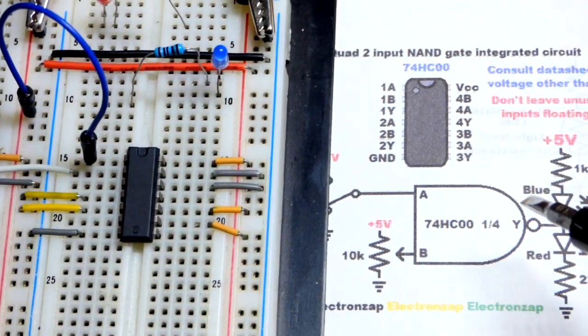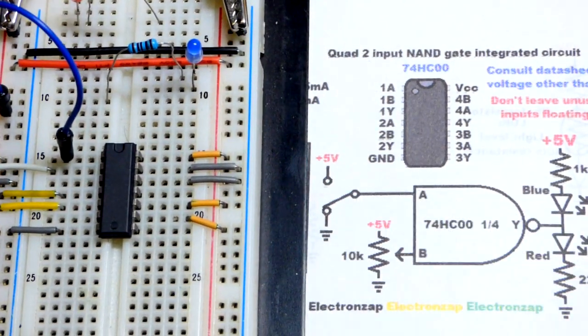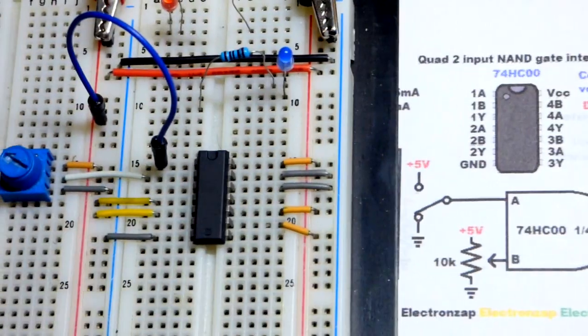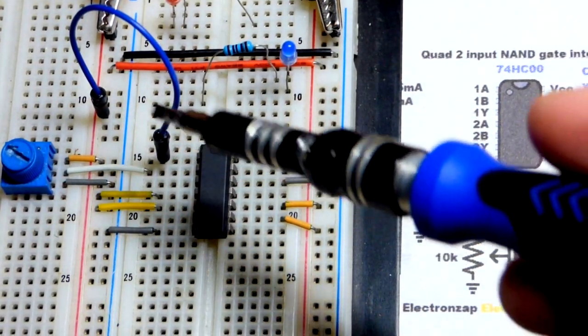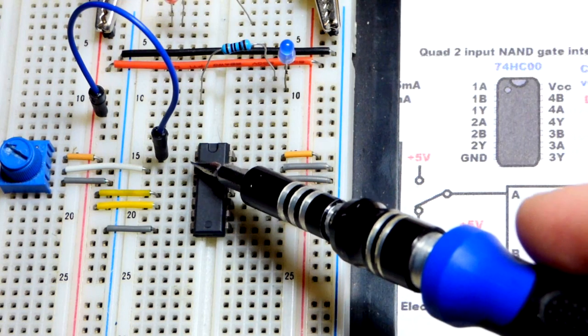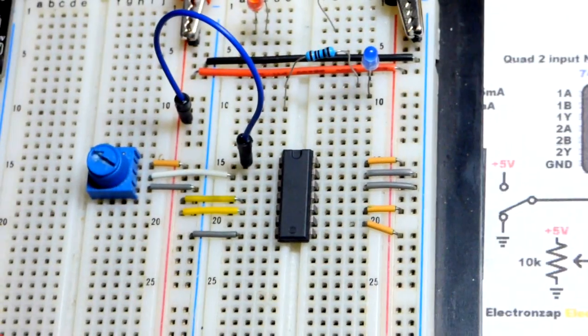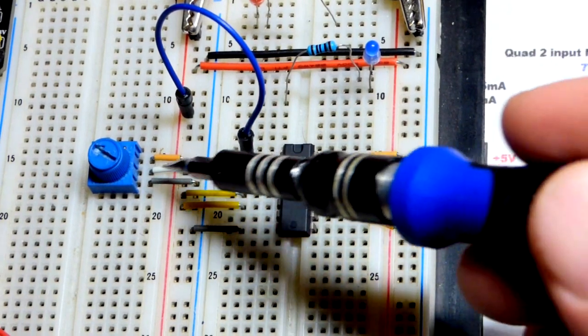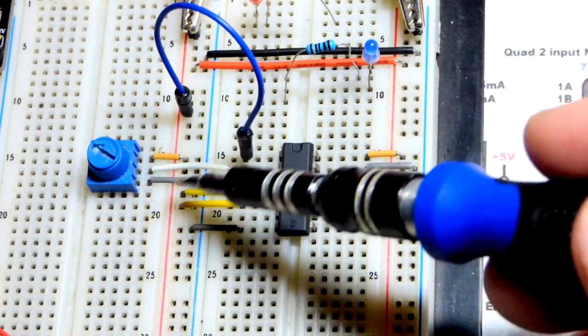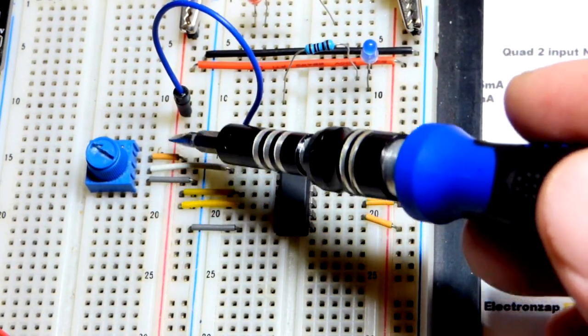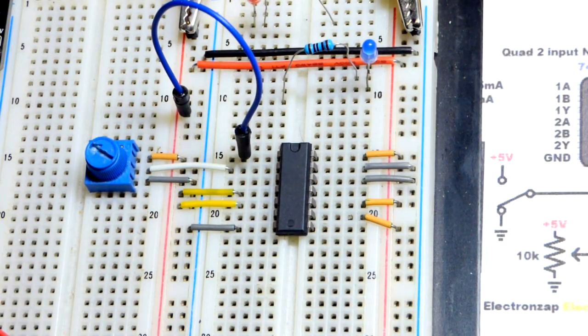So there you can see A, we have a jumper right there. That is going, right now it's to the positive supply. It doesn't really matter. That's the top pin. B right below it. We have going to the trim pot right there. The middle pin is the wiper that slides across the resistive element. And then we have the two ends to the power supply. And we have the power supply set to 5.1 volts.